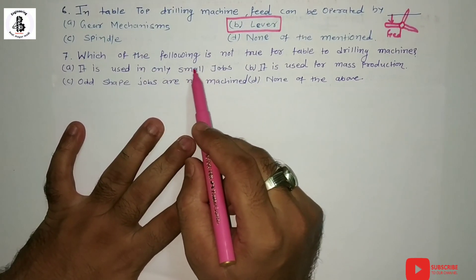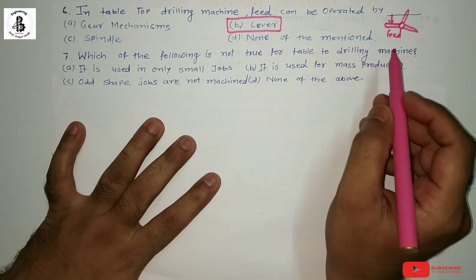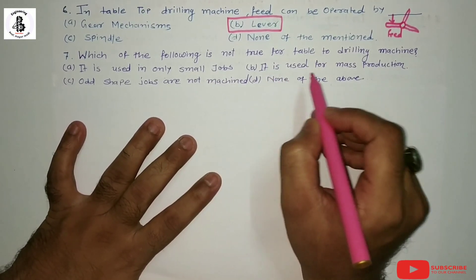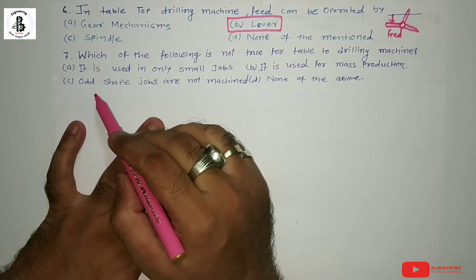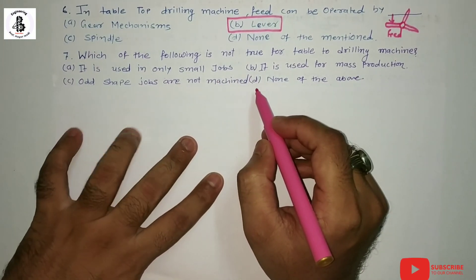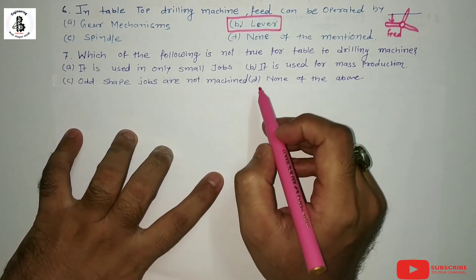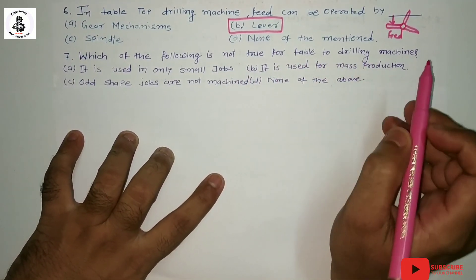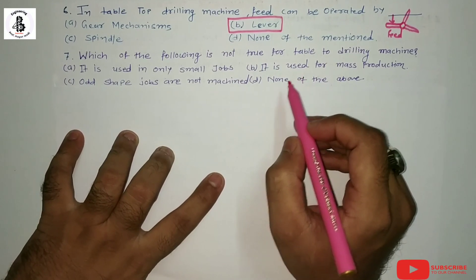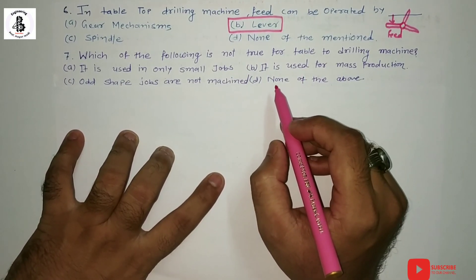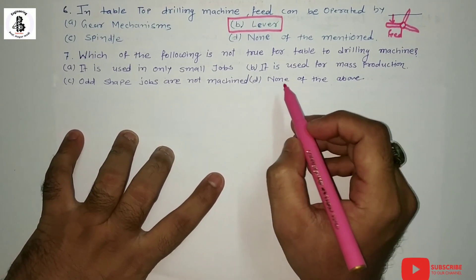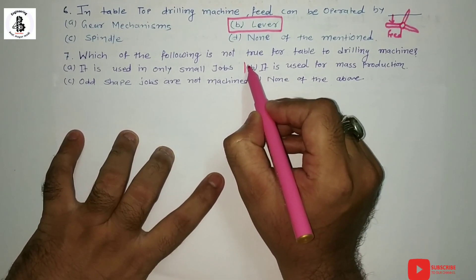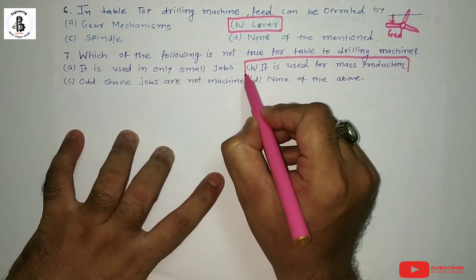Which of the following is NOT true for tabletop drilling machines? Option A: it is used for only small jobs. Option B: it is used for mass production. Option C: all safe jobs are not machined. Option D: none of the above. Tabletop drilling machines are not used for mass production. So the statement 'it is used for mass production' is not true. The right answer is option B.